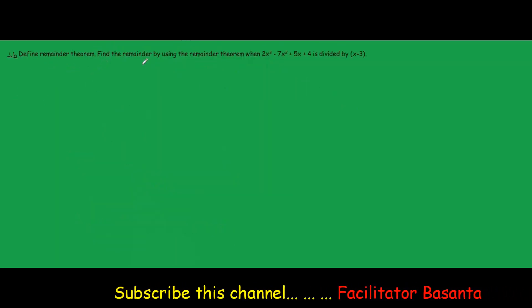Define remainder theorem. Find the remainder by using the remainder theorem when 2x cube minus 7x square plus 5x plus 4 is divided by x minus 3.